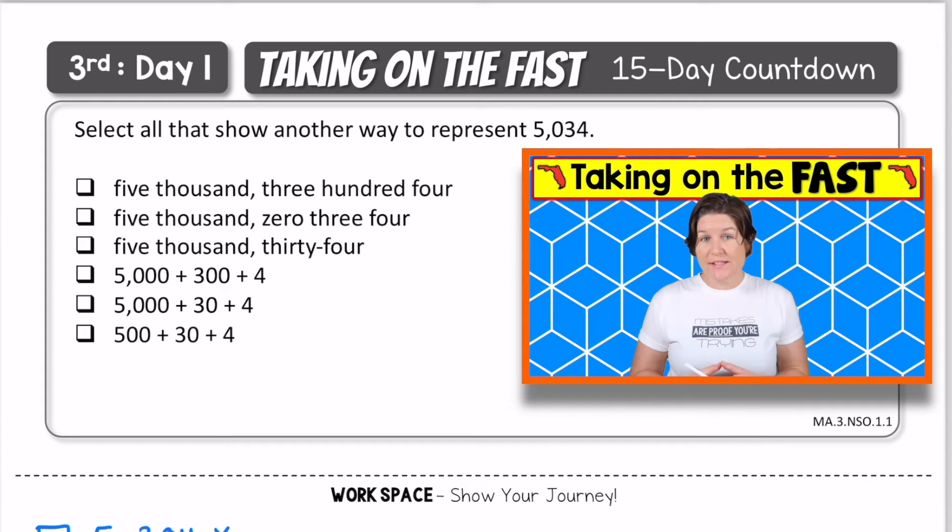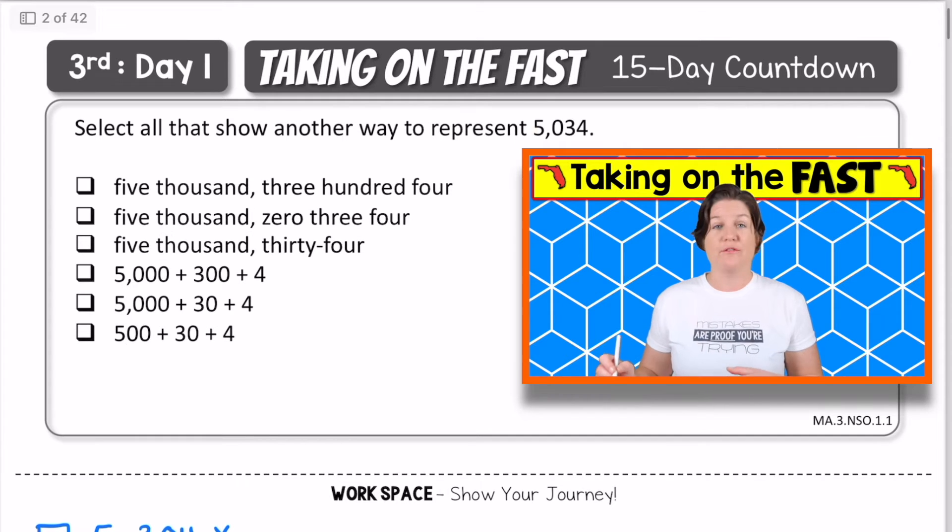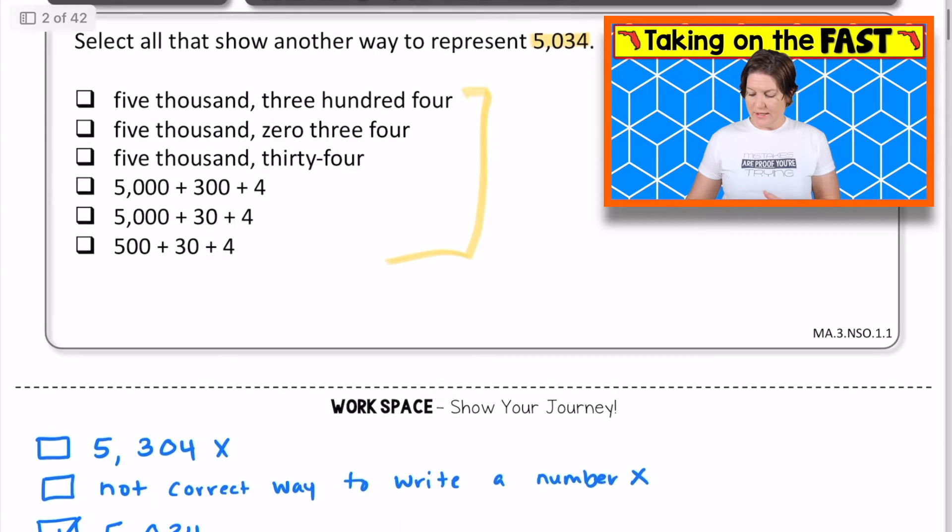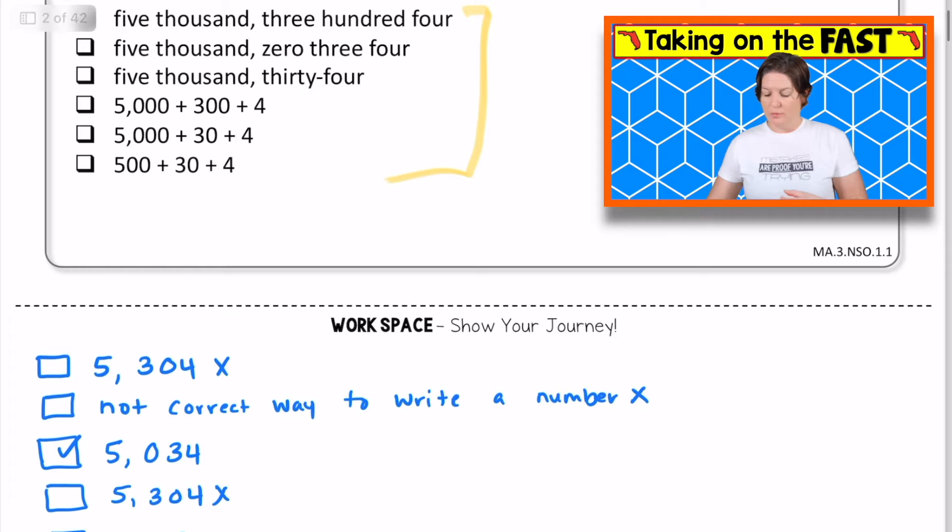So the first one is a multi-select problem, meaning that we need to select all of the correct answers and work through all of the answers to find those. The question says, select all that show another way to represent 5,034 right there. So what I did was I took all of these answer choices and brought it down here. Now it's important to transfer correctly.